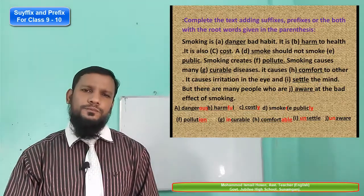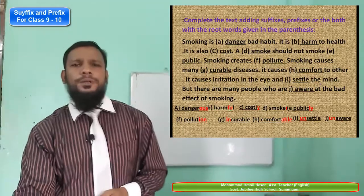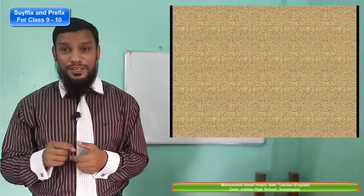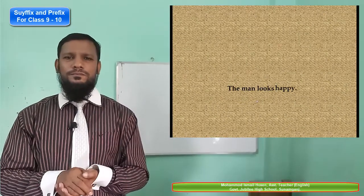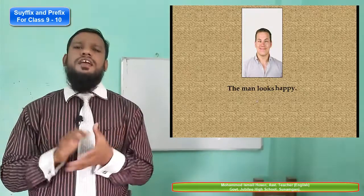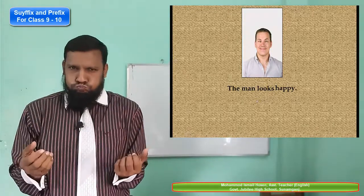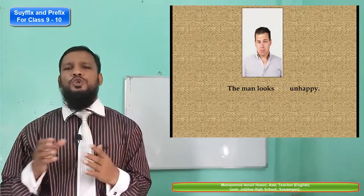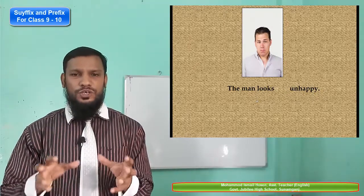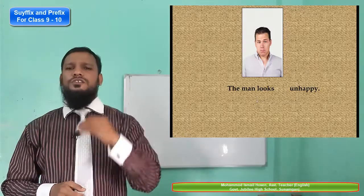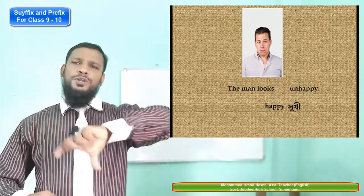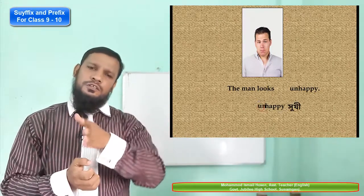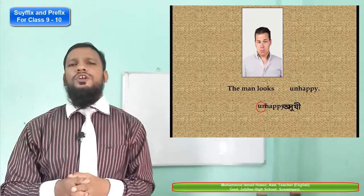Now, in the picture you can see a man. The man looks happy — yes, he is smiling. But this man looks unhappy. So, 'happy' is the root word, the base word. But 'unhappy' — 'un-' is a prefix, because 'pre' means before. It is fixed before 'happy', that's why it's called a prefix.